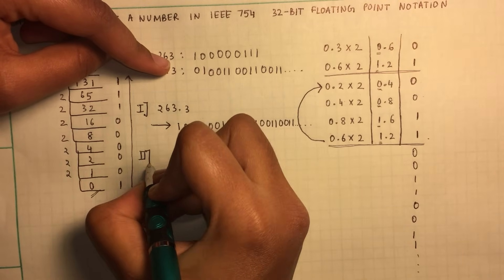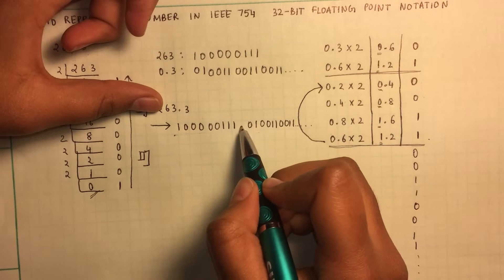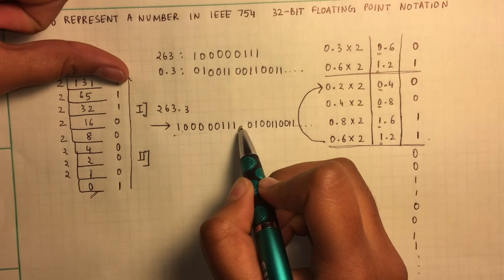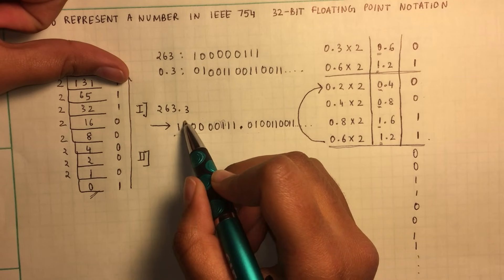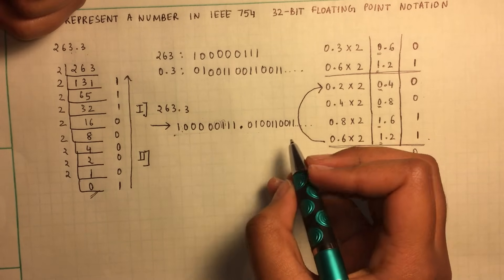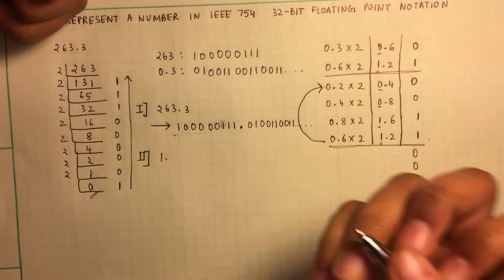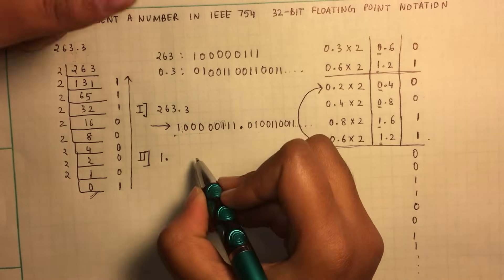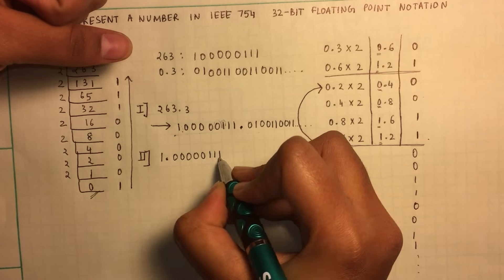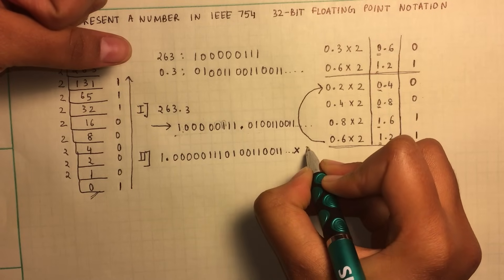The second step is to represent the binary form in scientific notation. You need to shift the decimal point to the left until it reaches just after the first 1. In this case we shift it eight times to the left, so the number gets multiplied by 2 eight times, that is 2 to the eighth. So in writing that would be 1.00000011101011001100110... times 2 to the 8th.